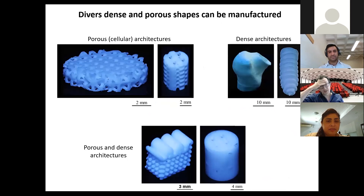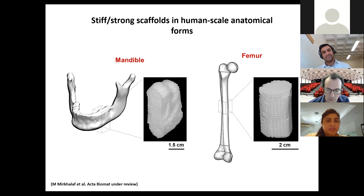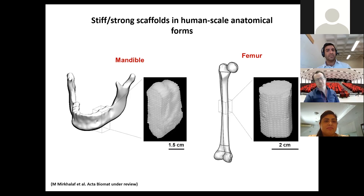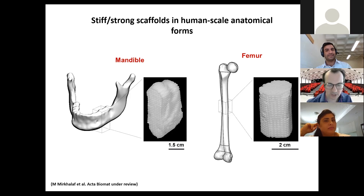You recently won a prestigious Australian Research Council Early Career Award — the DECRA. What aspects of this talk were included in that application, and where does this lead in your research career? Both 3D printing and 4D printing connect to my DECRA. In 3D printing, what I will do next is improve the fracture toughness of the ceramics. In 4D printing, what I will do next is explore much more complex shape changes.